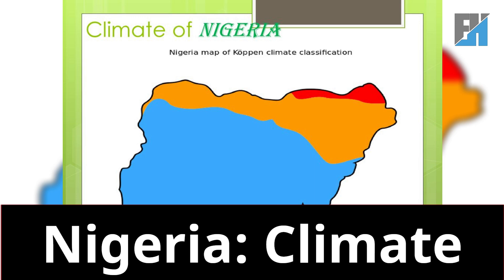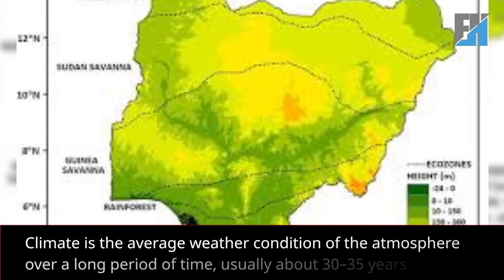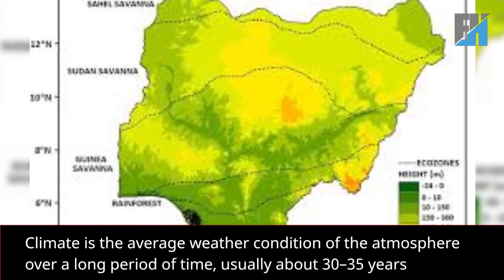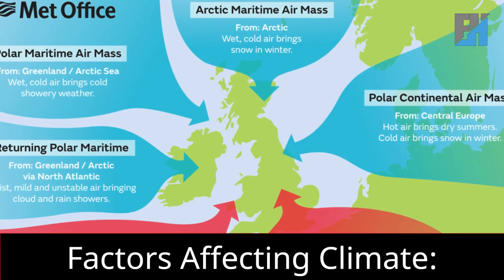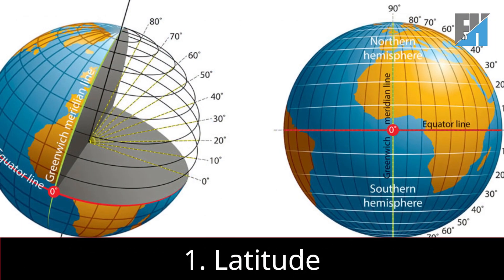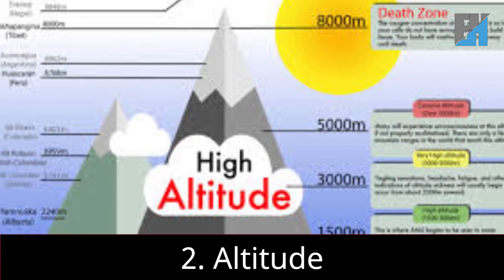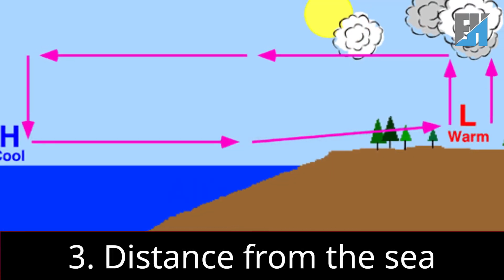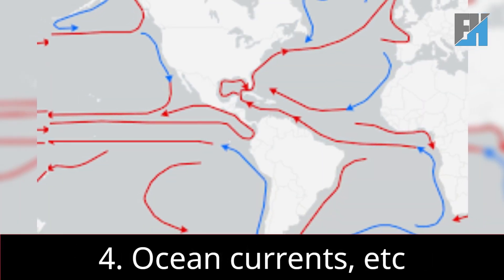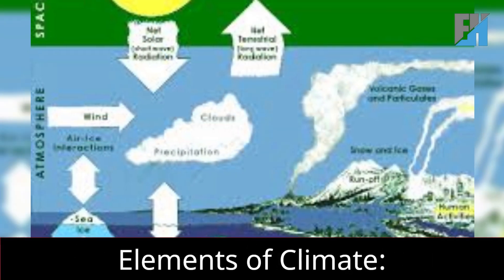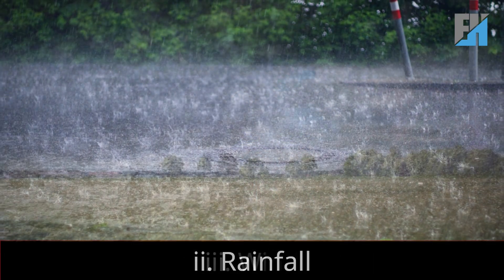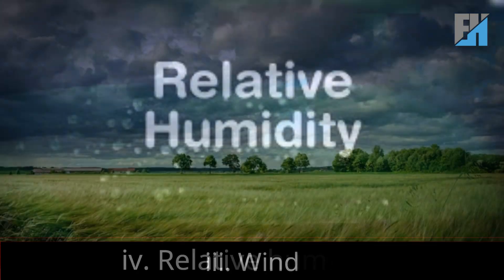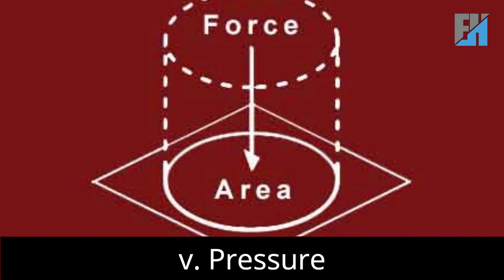In today's topic we would be discussing Nigeria's climate. Climate is the average weather condition of the atmosphere over a long period of time, usually about 30 to 35 years. Factors affecting climate: one, latitude; two, altitude; three, distance from the sea; four, ocean currents. Elements of climate: one, temperature; two, rainfall; three, wind; four, relative humidity; five, pressure; six, cloud cover; seven, sunshine.